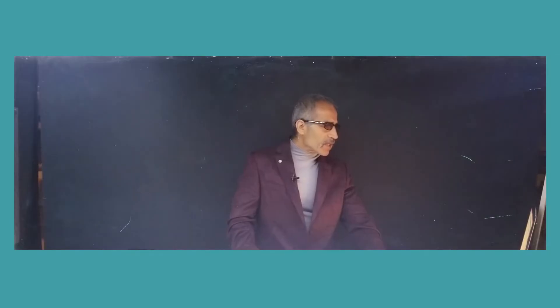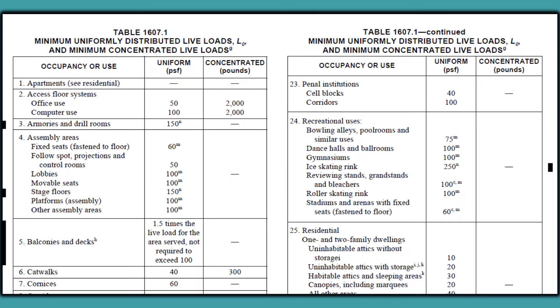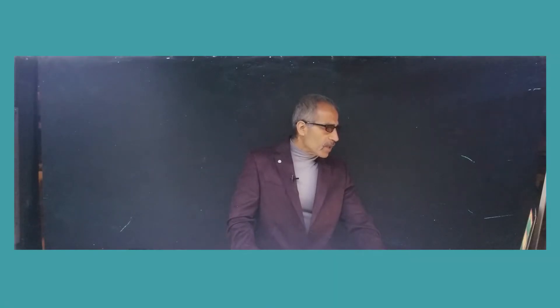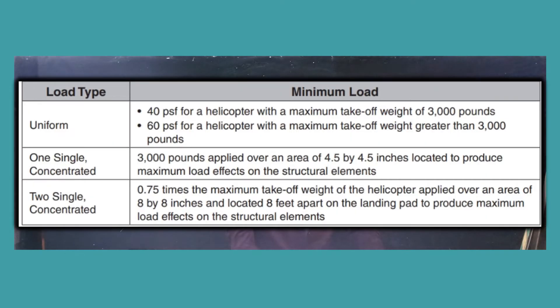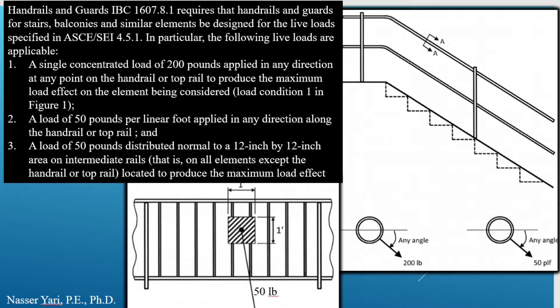Looking at Table 1607, it lists the minimum uniformly distributed live load and also concentrated live load based on occupancy. For example, even a helicopter pad on the roof is included — whether the helicopter weighs 3,000 pounds or more than 3,000 pounds, you design it based on this table. Continuing, you have stairway railings: you must design live load for those as well — it could be a single concentrated load of 200 pounds at any angle, or 50 pounds per linear foot in any direction, or a load of 50 pounds distributed normal to a 12-inch by 12-inch area.